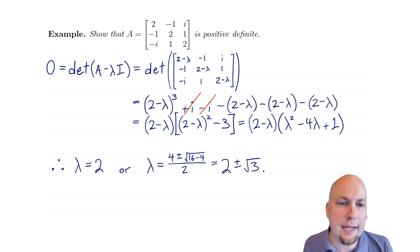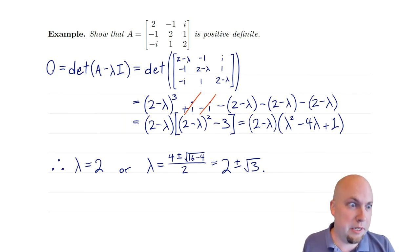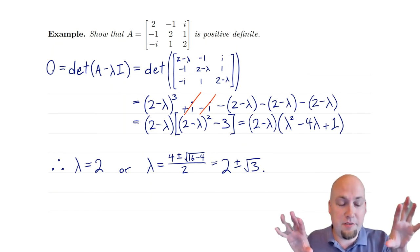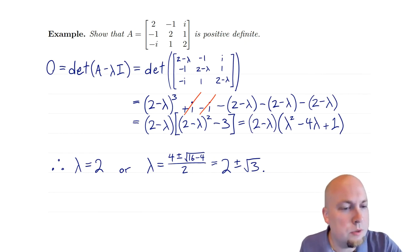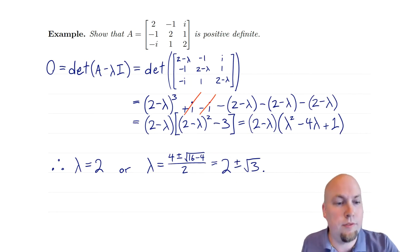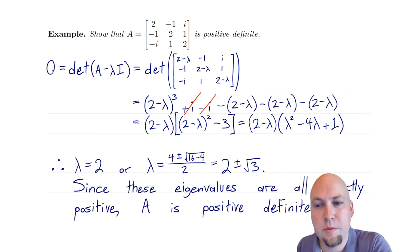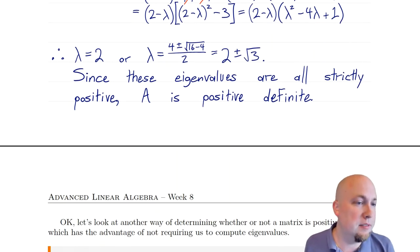Now that we've found the eigenvalues, we just need to verify they're all strictly positive. λ=2: yes, 2>0. λ=2+√3: positive plus positive, also bigger than zero. The only one to be careful of is λ=2−√3, but we can see that's positive too even without a calculator, because 2 is just √4, so it's √4−√3, and a bigger root minus a smaller root is strictly positive. So all eigenvalues are strictly positive, and A is a positive definite matrix.